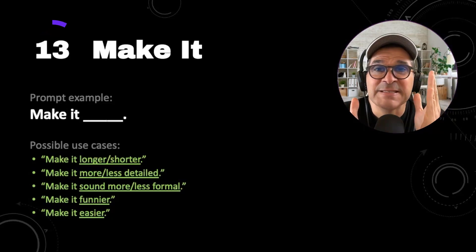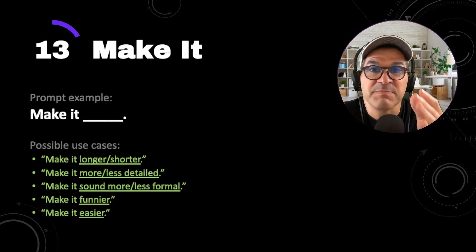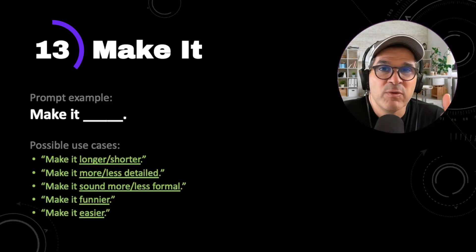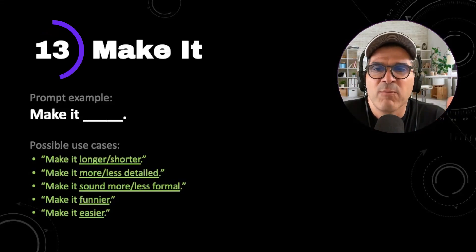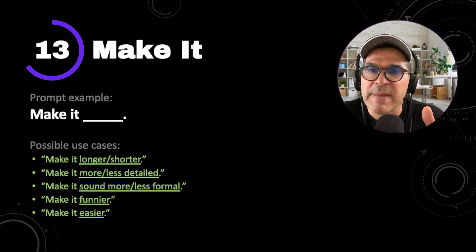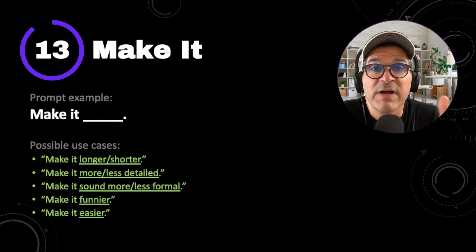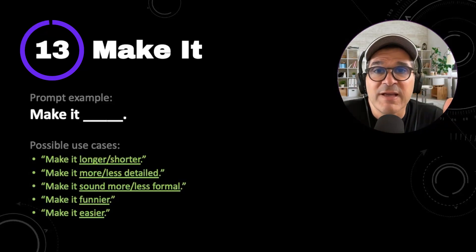These last three prompts are what we consider follow-up prompts. Let's say you've given ChatGPT some commands but they didn't quite give you the results you wanted — use one of these to help improve your results. Power prompt number 13 is make it. The prompt example is make it blank. Some possible use cases: make it longer or shorter, make it more or less detailed, make it sound more or less formal, make it funnier, make it easier. You get the idea.